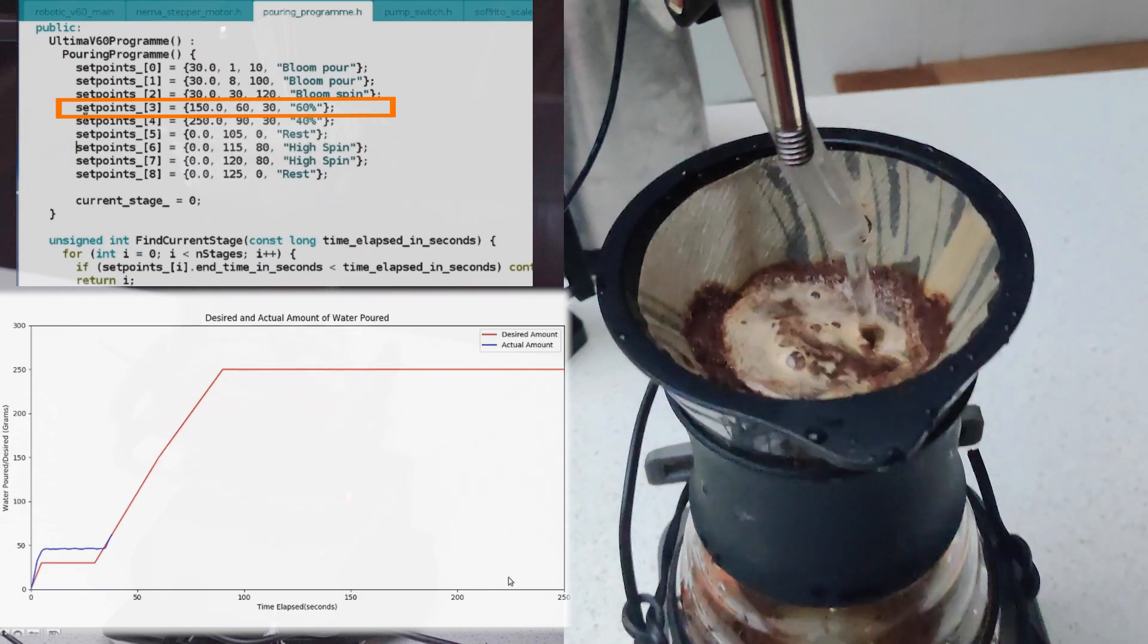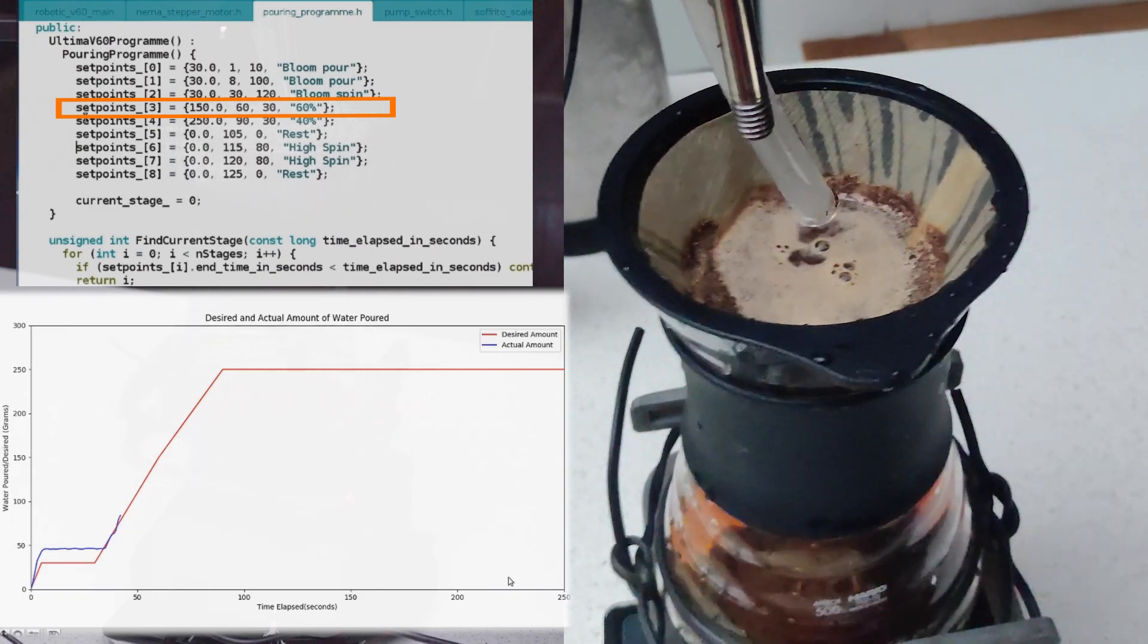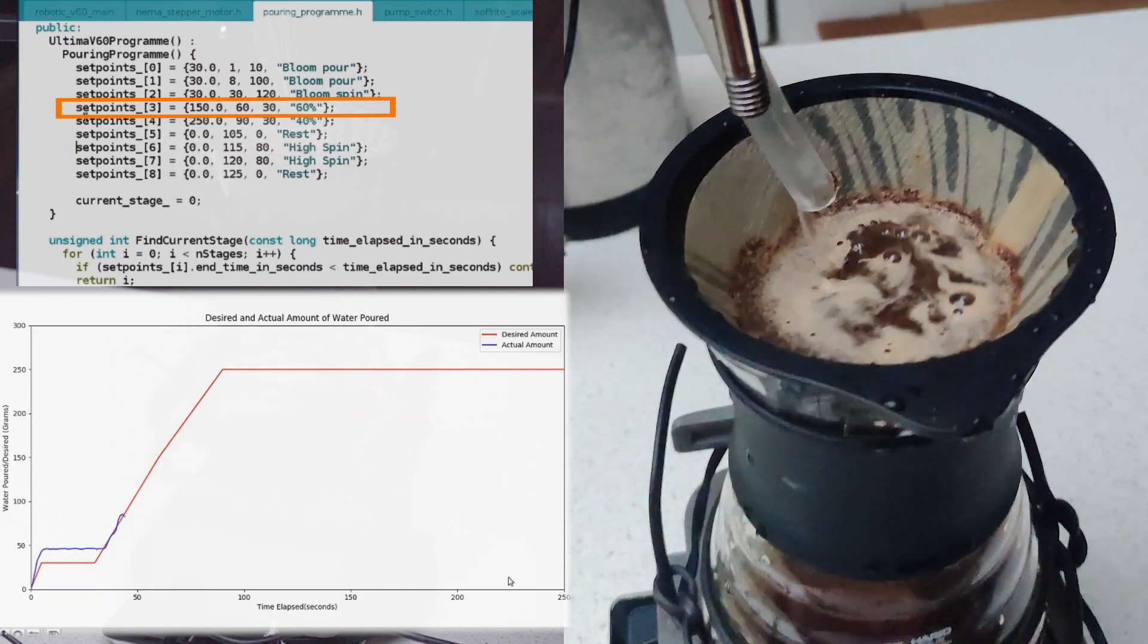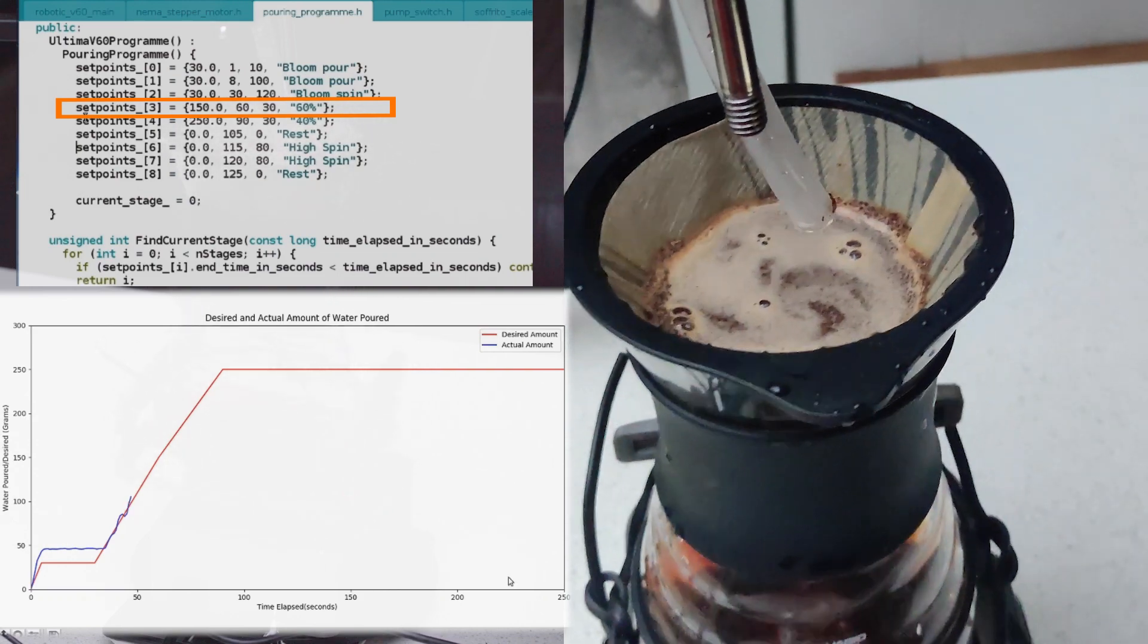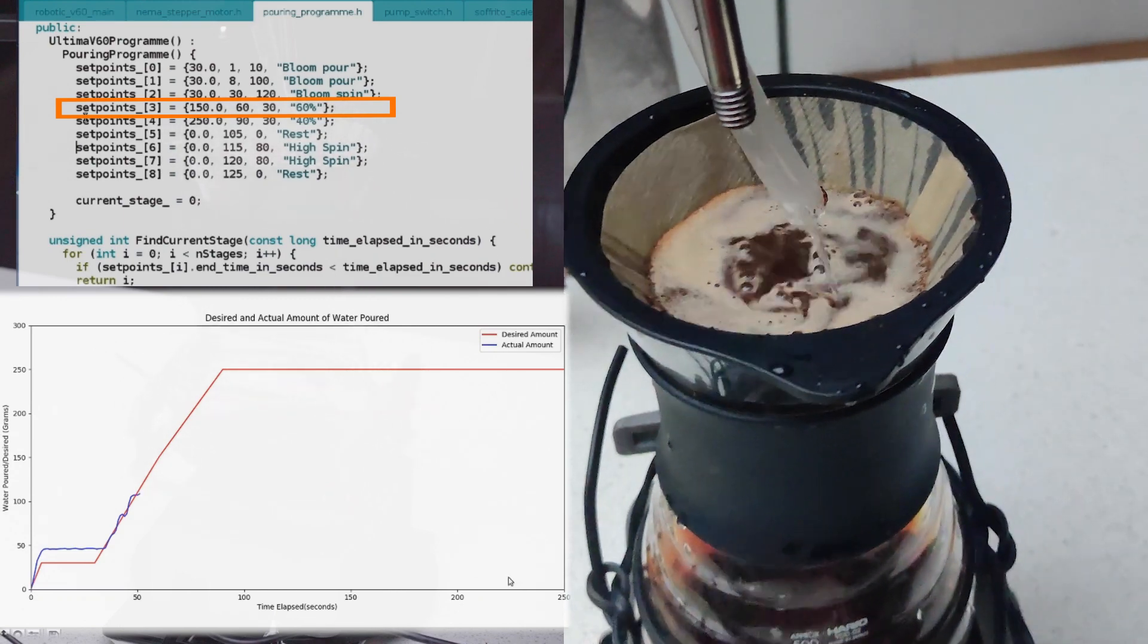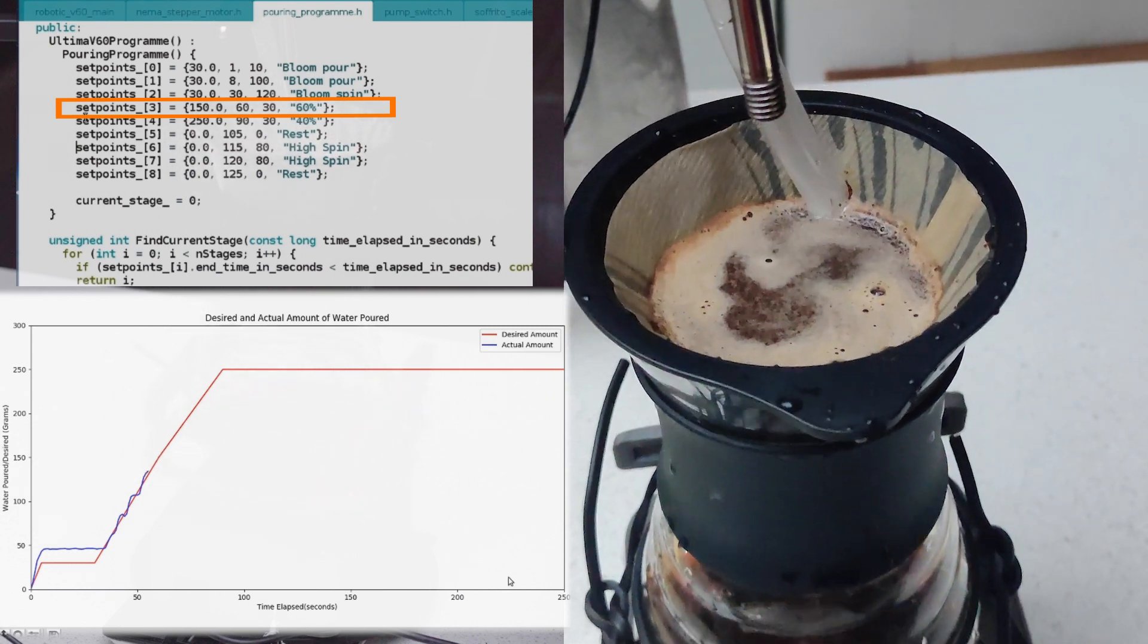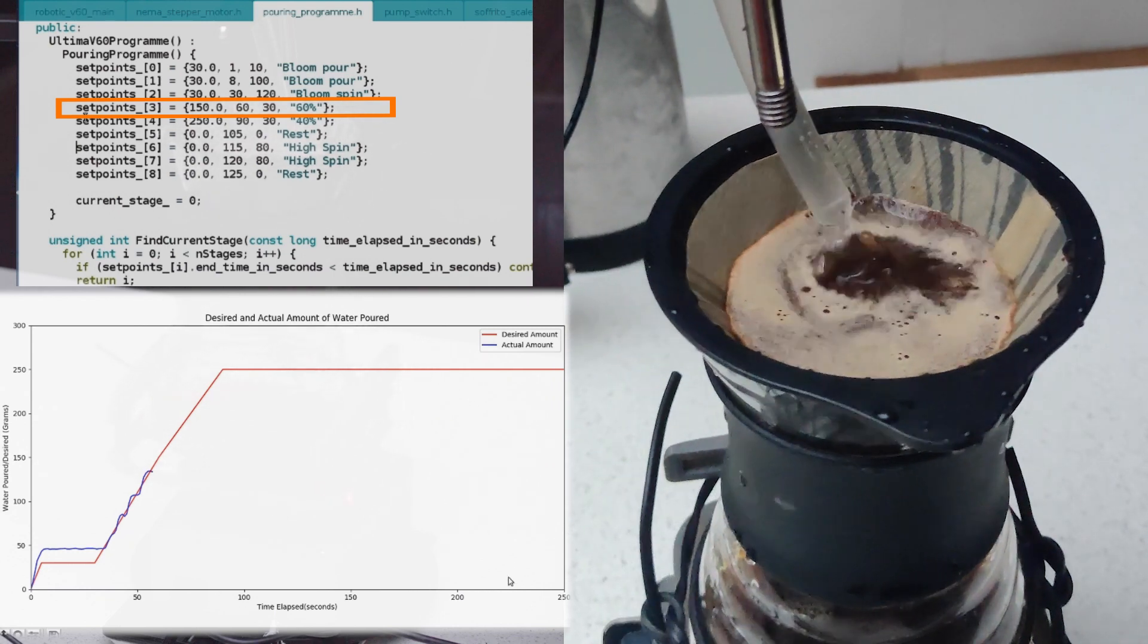At the 30 second mark, we enter the next phase where over the next 30 seconds we aim to pour up to 150 grams of water. Here we want a uniform flow rate represented by the red line. And since my pump doesn't allow me to control the flow rate, I've designed a controller such that whenever the blue line, the current amount of water poured, falls under the red line the pump is activated and we pump a little more water.